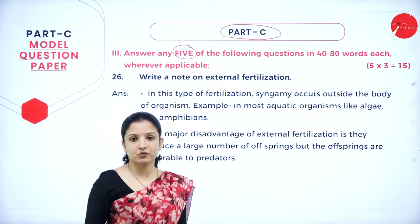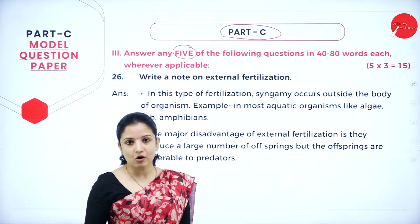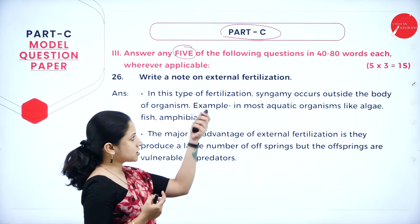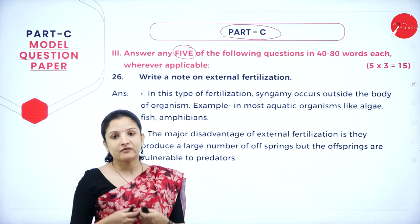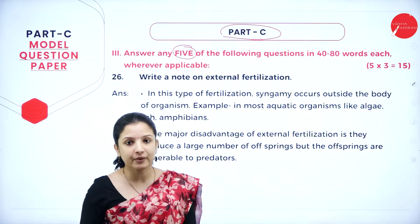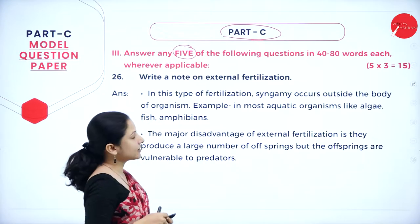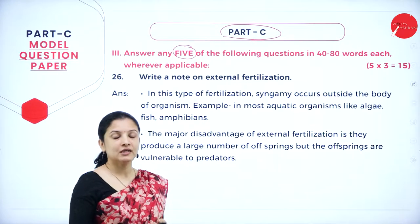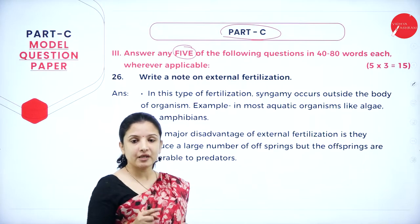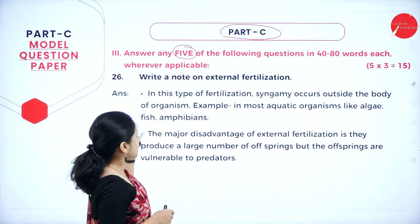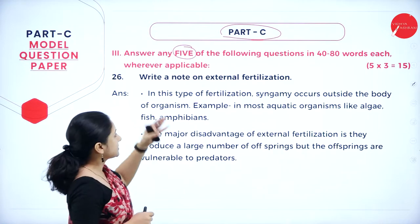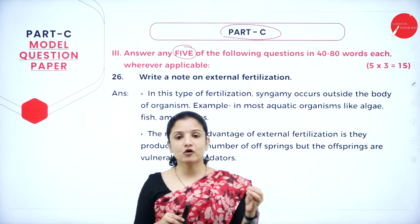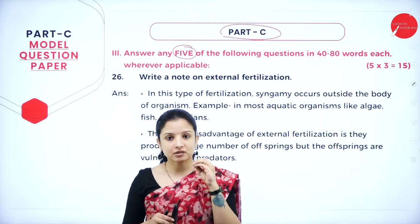In the previous question paper, only 2 or 3 extra options would have been given, but here you have 5 extra options for your benefit. We need to write answers in 40 to 80 words each, and wherever applicable, include a diagram with proper labeling. Moving further, question number 26. Write the questions properly — don't skip questions or write the wrong question numbers, as marks will be lost.